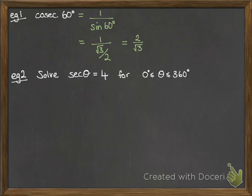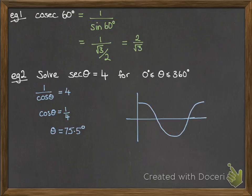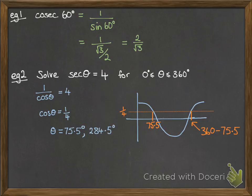Example number 2: we're going to solve sec theta equals 4 for theta between 0 and 360 degrees. Sec is 1 over cos, so let's rewrite that as 1 over cos theta equals 4, meaning cos theta equals a quarter. We solve that in the usual way — on your calculator, make sure it's in degrees, do inverse cos of a quarter and you get theta equals 75.5 degrees. That gives the first value. To find the other value within 0 to 360, using the symmetry of the cosine graph, the other value is 360 minus 75.5, which gives us 284.5 degrees.